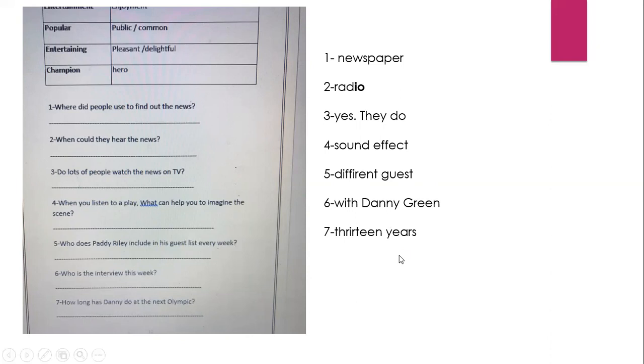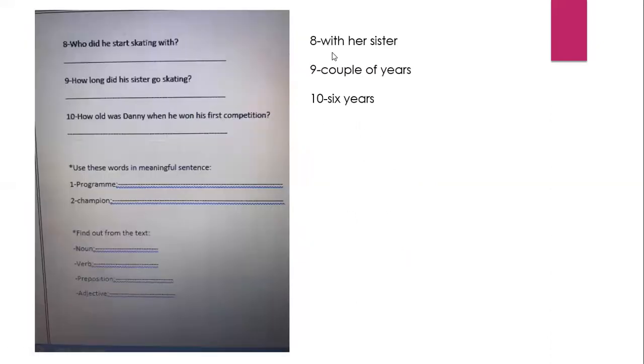It's a very easy question. Yes, the next stage, question number eight. Who did he start skating with? Her sister. How long did his sister go skating? A couple of years or two years. Both are correct. Couple, the same as two. How old was Danny when he won his first competition? He was six years.